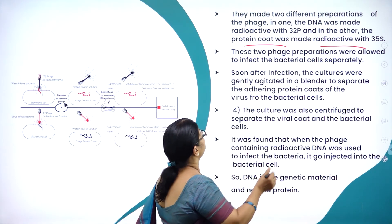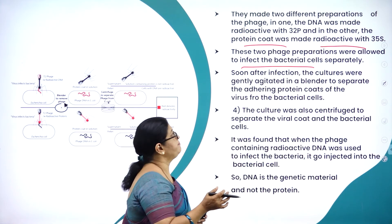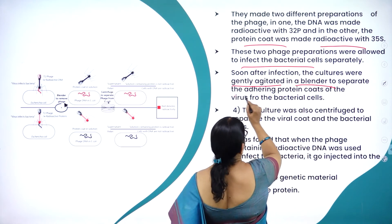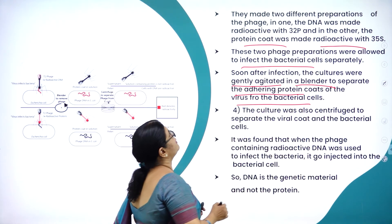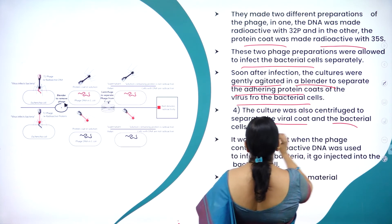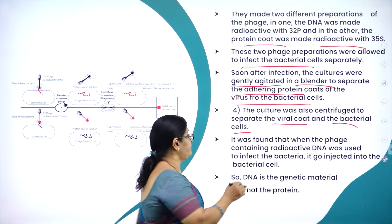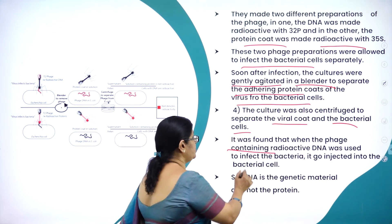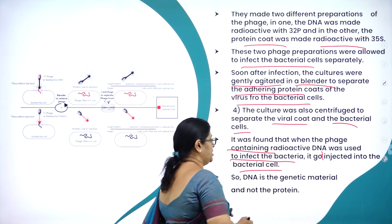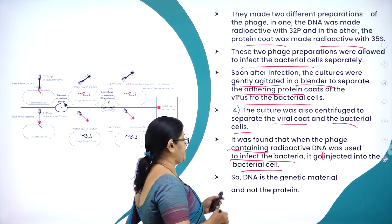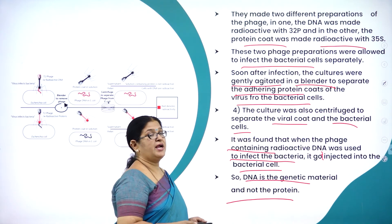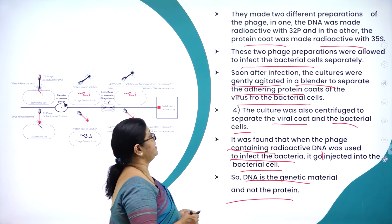These two phage preparations were allowed to infect bacterial cells separately. Soon after infection, the cultures were gently agitated in a blender to separate the adhering protein coats of the virus from the bacterial cells. The culture was then centrifuged to separate the viral coat and bacterial cells. It was found that the phage containing radioactive DNA was injected into the bacterial cell — proving that DNA is the genetic material and not the protein.